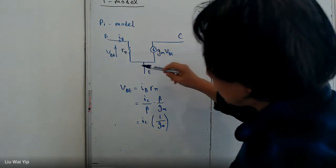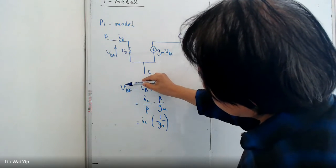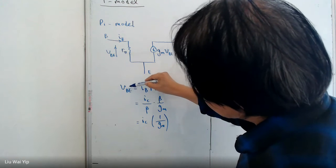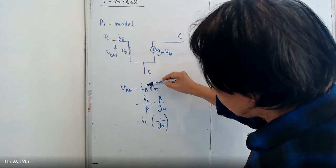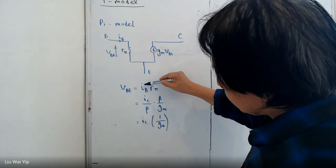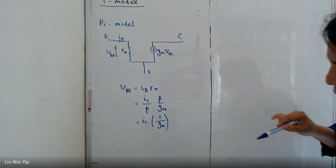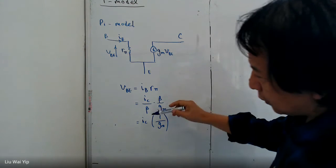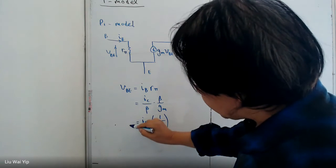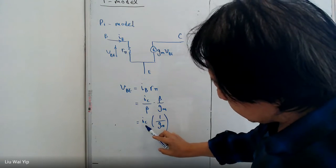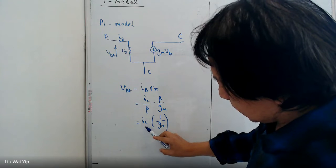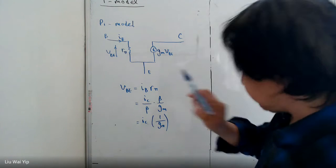So originally, the input voltage VBE is expressed in terms of IB times something. But now, you can find out VBE can also be expressed as IC times something.